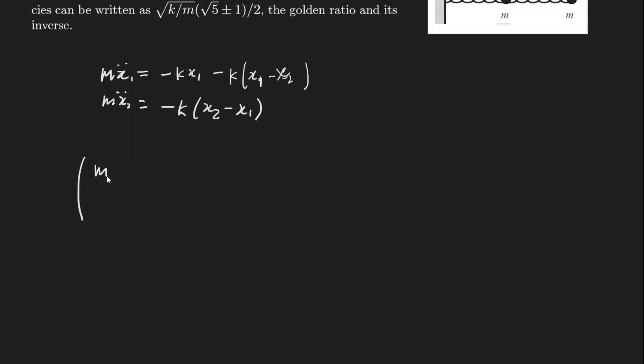So we can write the matrix like this. M 0, 0 m times x1 double dot and x2 double dot is equal to, well, first let's rewrite these so that they're in terms of x2 and x1. So this is plus k times x1 minus k times x2, and this is equal to minus 2k x1 plus k x2.